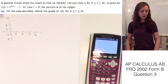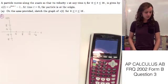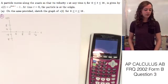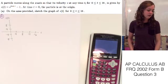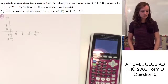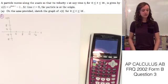And this question says, a particle moves along the x-axis so that its velocity v at any time t for the time falling between 0 and 16 is given by v(t) equals e to the 2 sine t minus 1. At time t equals 0, the particle is at the origin.